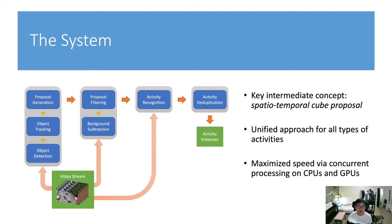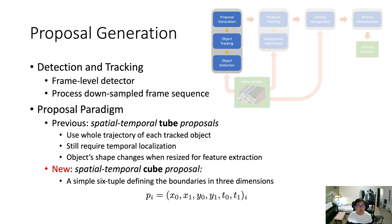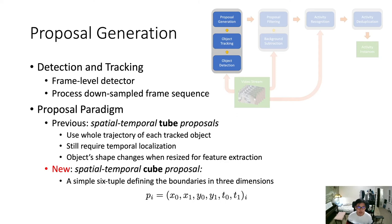Let's begin with the proposal generation part. For object detection and tracking, which is a traditional field, we use a frame-level detector processing a downsampled frame sequence and associate those objects in each frame with an existing algorithm. After we get the object tracklist, it's important to see how we get those proposals. Previously, people tended to use a spatial temporal tube proposal generation paradigm, simply using the whole trajectory of each tracked object.